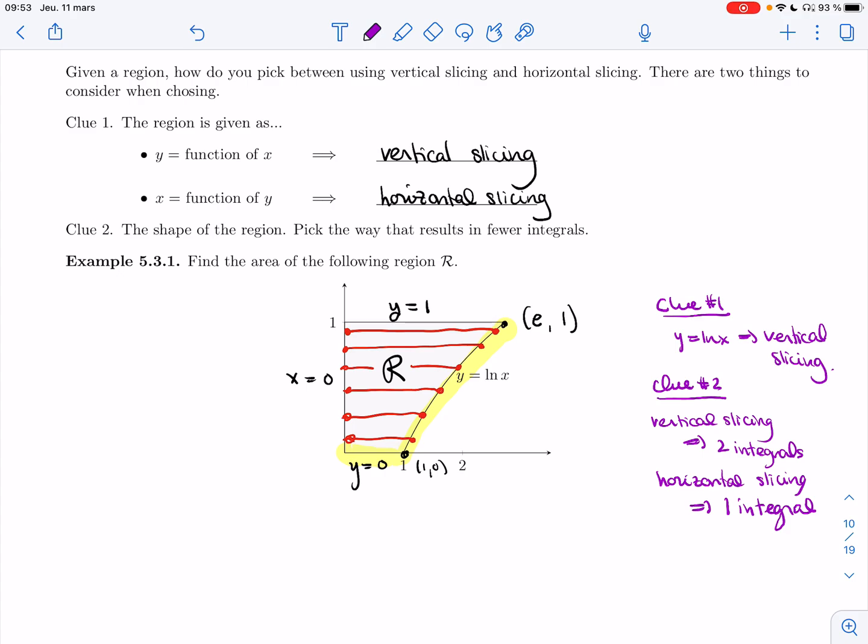So we could use horizontal slicing. It seems to make sense, because it would be only one integral. The actual work you'd have to do is you'd have to isolate x in this curve. But that's not hard. I can do it right now. This is the same as x equals e to the y.